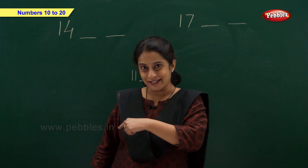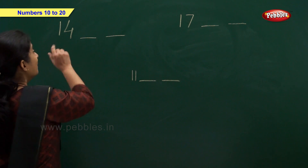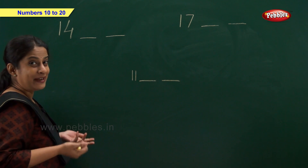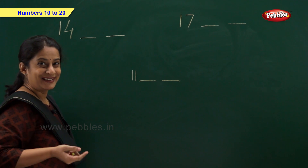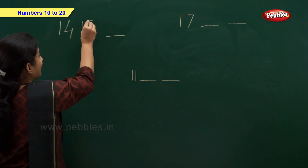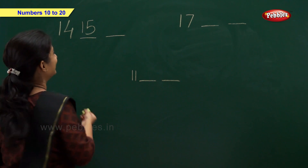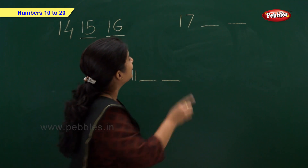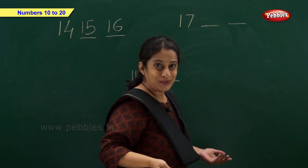Let us solve these examples. We have number 14 — which number comes after 14? We have 2 missing numbers after 14. Who will tell me? Write number 15, and after 15 — excellent! — number 16. And here we have number 17, so which 2 numbers come after 17?